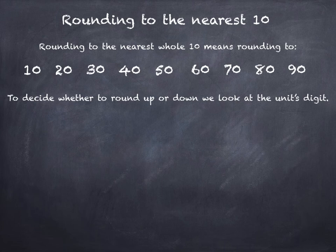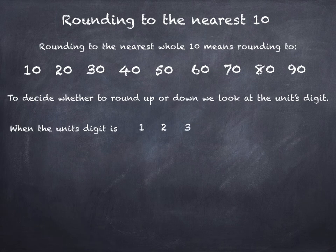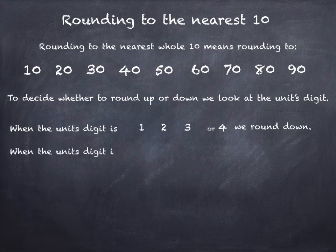To decide whether to round up or down we look at the units digit. When the units digit is 1, 2, 3 or 4 we round down. When the units digit is 5, 6, 7, 8 or 9 we round up.